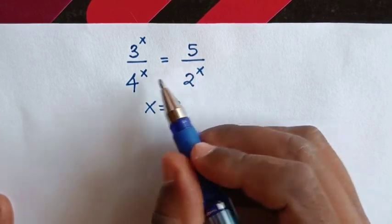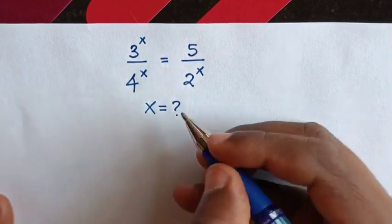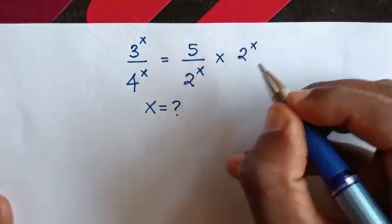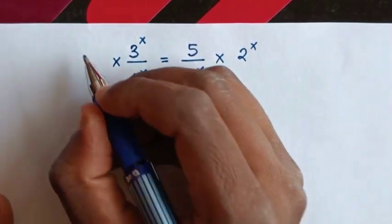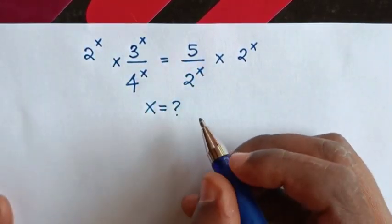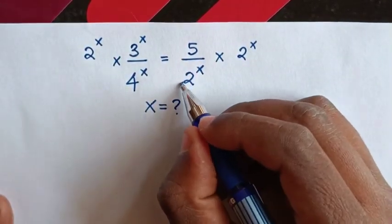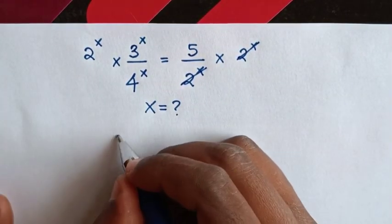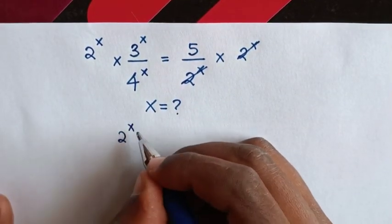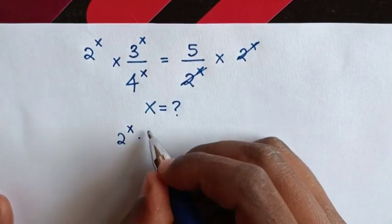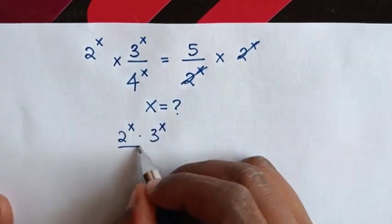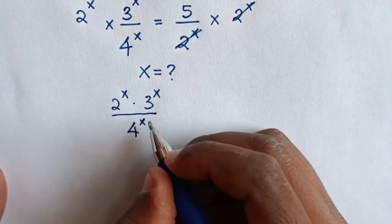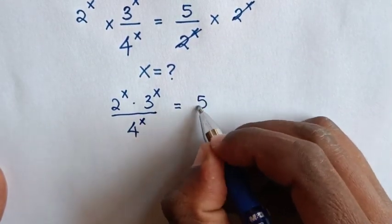First we make exponents with the same power of x on one side. So here we multiply by 2 power x on both sides. Then these will cancel, so our equation becomes 2 power x times 3 power x over 4 power x is equal to 5.